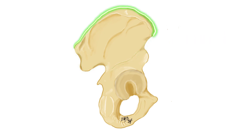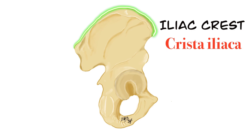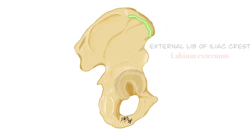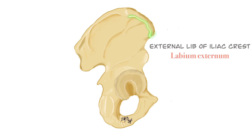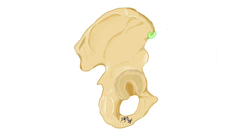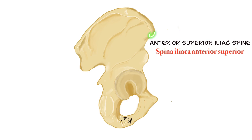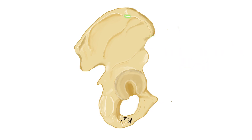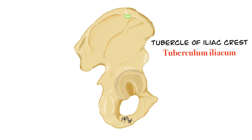The upper edge of the ala osis ilii is called the iliac crest, or crista iliaca in Latin. Crista means ridge or crest in Latin. The outer edge of the crista iliaca is called the external lip of the iliac crest, or labium externum in Latin. Labia means lip in Latin. The anterior spinous process of the crista iliaca is called the anterior superior iliac spine, or spina iliaca anterior superior in Latin, abbreviated as SIAS. Approximately 5 cm posterior to the SIAS, there is a protrusion on the labium externum called the tubercle of the iliac crest, or tuberculum iliacum in Latin.